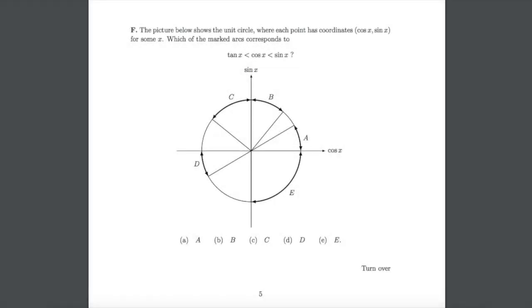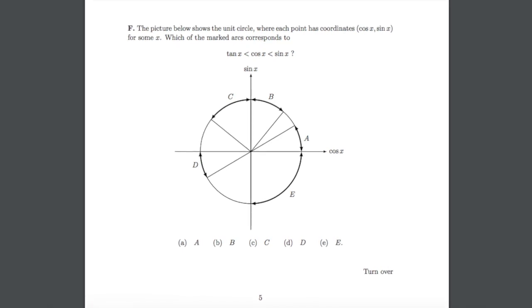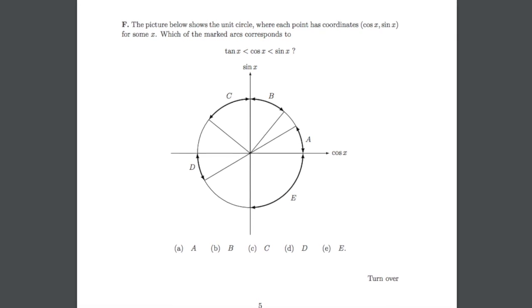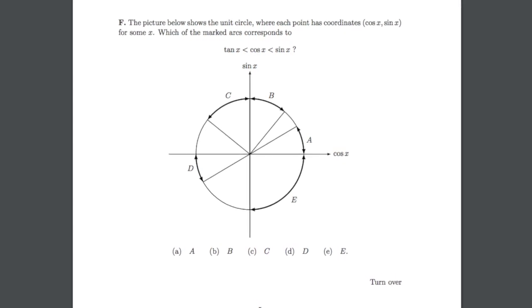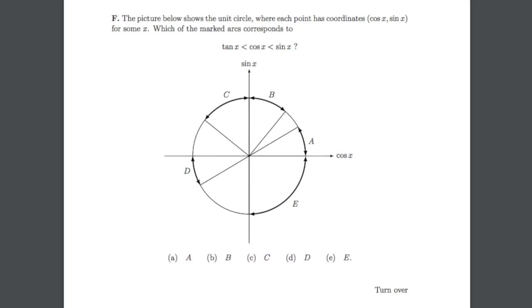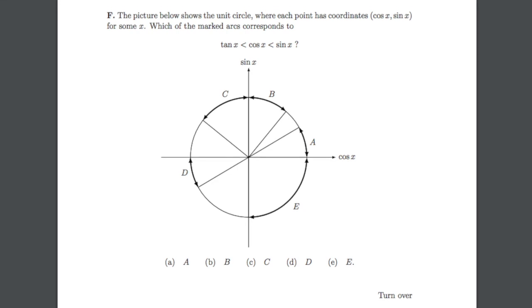Today we're going to look at question 1f of the 2017 MAT exam. We are shown a unit circle where each point has coordinates (cos x, sin x) for some value of x. We are asked to determine which of the five arcs corresponds to the inequality tan(x) < cos(x) < sin(x).